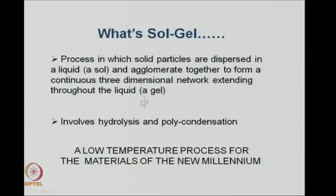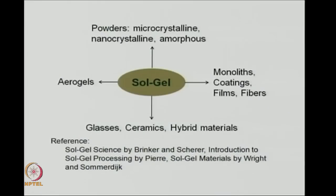The sol-to-gel transition involves hydrolysis and polycondensation. This is a low temperature process and many new materials — called advanced materials for the new millennium — are being synthesized by this low temperature route. From the sol-gel method you can get powders which are microcrystalline or nanocrystalline, or amorphous powders that lack the long-range order which is present in crystalline substances. You can also make aerogels: a porous network structure obtained if you remove the liquid from the gel without destroying the structure.